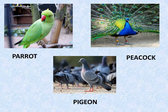Now children, you can see the green color bird. This is called Parrot. How do you spell it? P-A-R-R-O-T, Parrot.